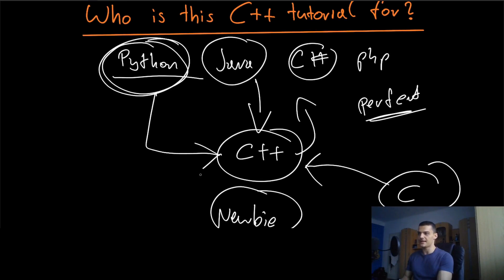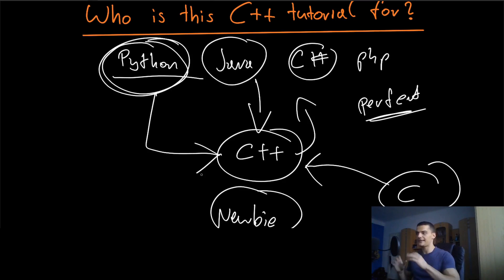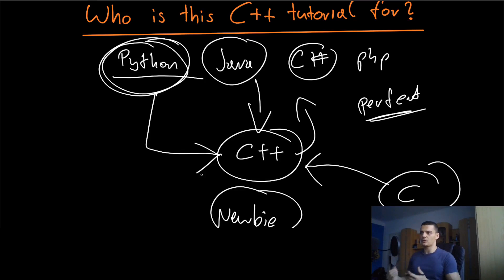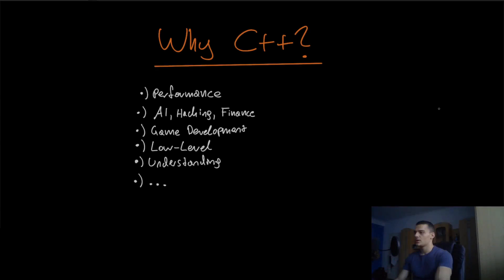This series is perfect for people who are already decent at Python and now want to transition to C++. This channel has a lot to do with machine learning and Python — the focus is heavily on Python — and now we're adding C++ to our arsenal, because there are a lot of things that can't be done with Python. C++ is a great addition to Python; this combination is powerful, and the series works well for Java and C# programmers too.